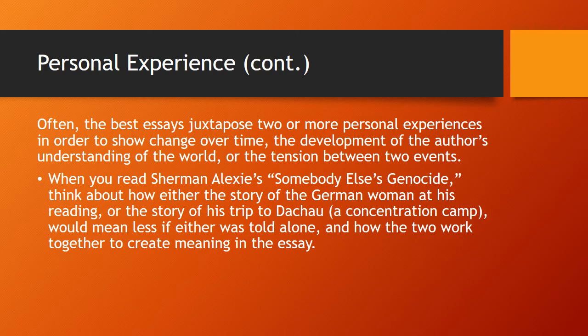Often, the best essays juxtapose two or more personal experiences in order to show change over time, the development of the author's understanding of the world, or the tension between two events. When you read Sherman Alexie's Somebody Else's Genocide, think about how either the story of the German woman and his reading, or the story of his trip to Dachau, a concentration camp, would mean less if either was told alone, and how the two work together to create meaning in the essay.